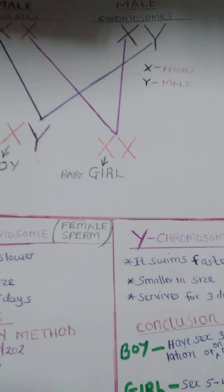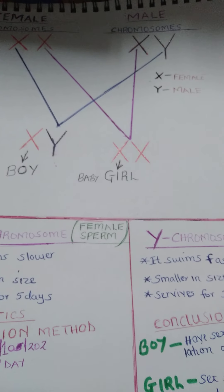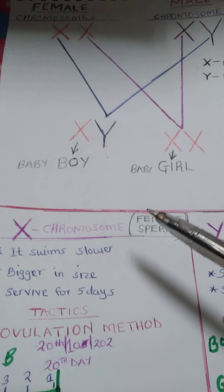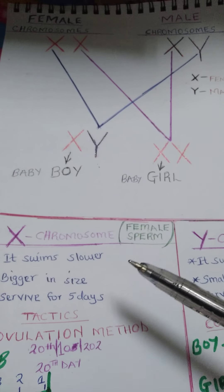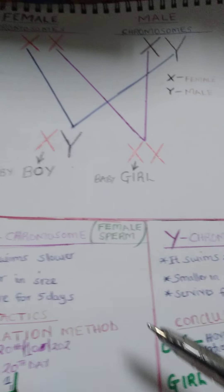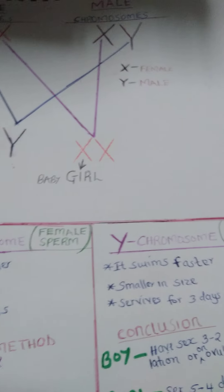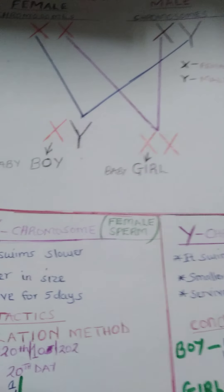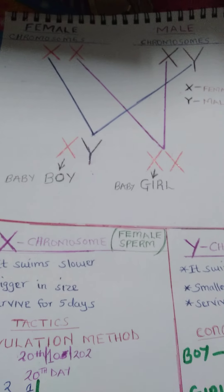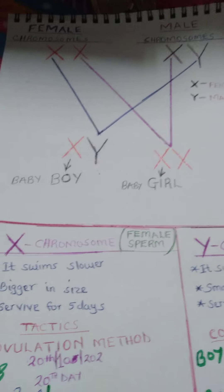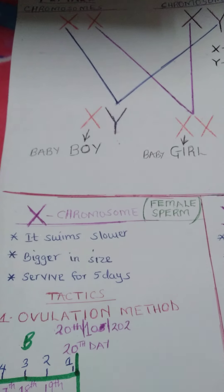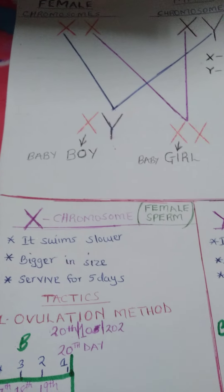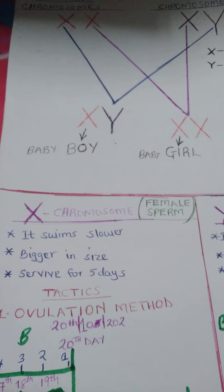When a man releases sperms, the X sperm for a girl child stays for a long time as compared to the sperm of the boy child. If you need to conceive a baby boy, the first method is the ovulation method.